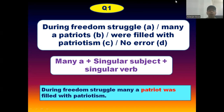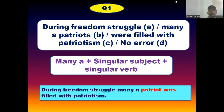And after that, in section C, you will find that it is written 'were,' which is absolutely wrong because we need to take a singular verb. Instead of 'were,' it should be 'was.' So two errors are there in section B and section C. It will be 'many a patriot, was.' The correct answer will be: during freedom struggle, many a patriot was filled with patriotism. Now you just think — if this rule is known to you, how much time will you take to solve the question? Hardly a fraction of a second.